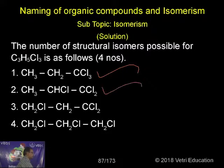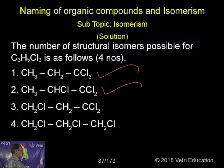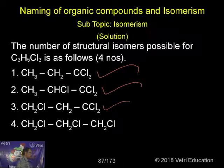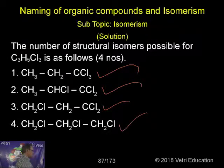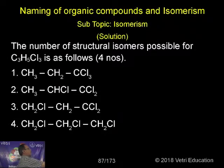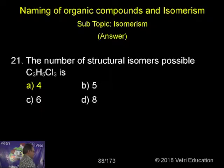The four isomers of trichloropropane are: 1,1,1-trichloropropane; 1,1,2-trichloropropane; 1,1,3-trichloropropane; and 1,2,3-trichloropropane. There are four in total, so the answer is A.